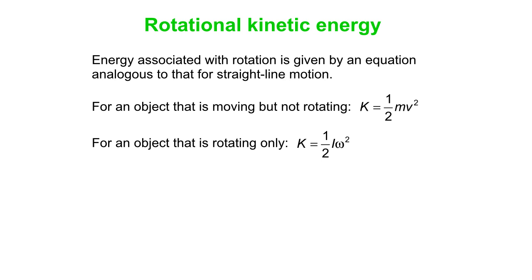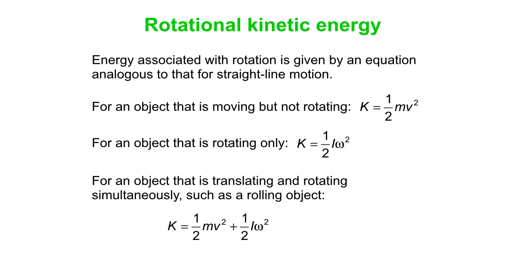So for an object that is both moving in a straight line, in other words translating, as well as rotating, and an example might be a rolling object, then the total kinetic energy is the sum of these two pieces. There's the translational kinetic energy, one half mv squared, and the rotational kinetic energy, one half I omega squared. And so they both contribute to the total kinetic energy.